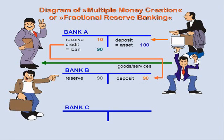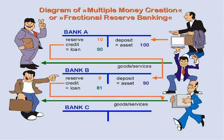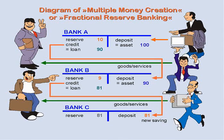Again, a client comes and asks for a loan. Bank B keeps 10% of the amount as reserve in its safe and gives 81 monetary units as a loan to the second client. He too wants to buy something, and again money and goods are changing hands. The second merchant deposits his income in Bank C, and this procedure could go on and on until nearly 900 monetary units of credits had been granted by a number of subsequent banks.